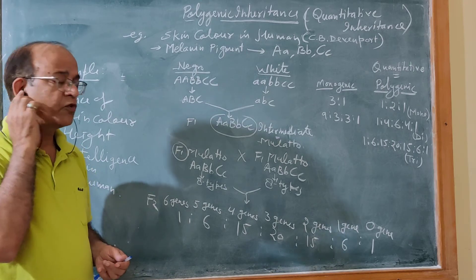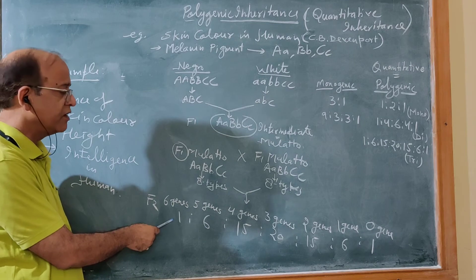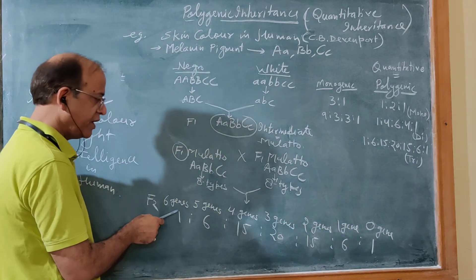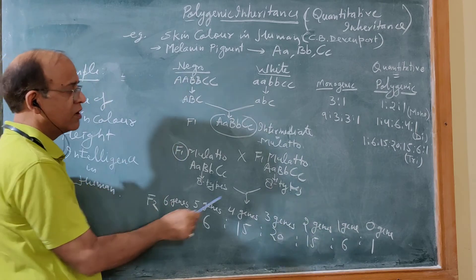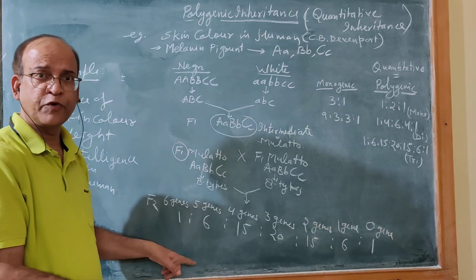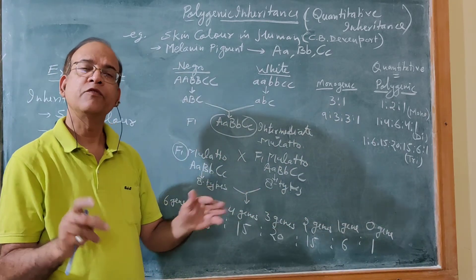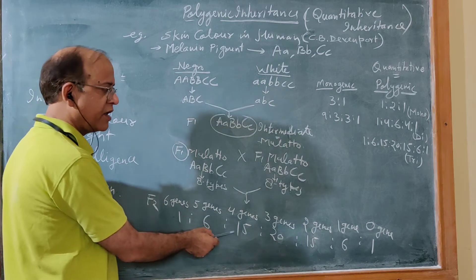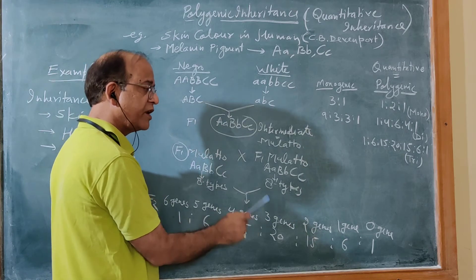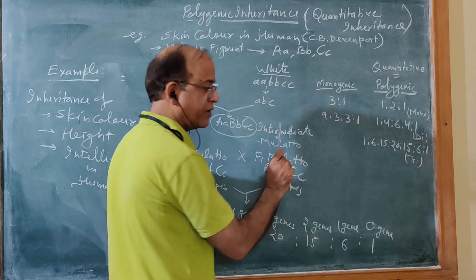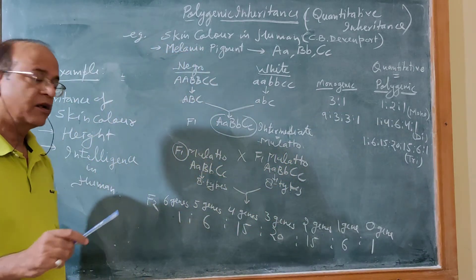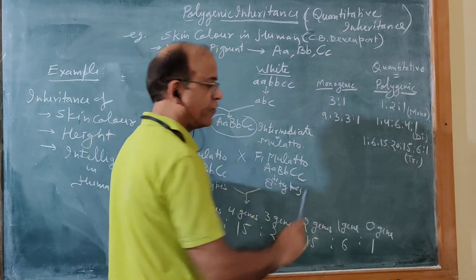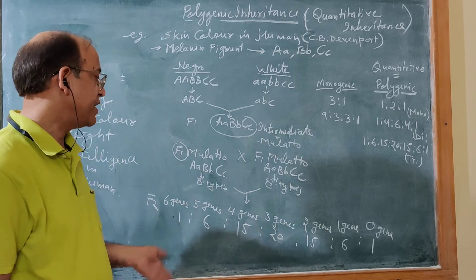When calculated, out of those 64 combinations: one individual has six dominant genes (Negro), one has zero dominant genes (white), six have five dominant genes, fifteen have four dominant genes, twenty have three dominant genes, fifteen have two dominant genes, and six have one dominant gene. The ratio in F2 generation is 1:6:15:20:15:6:1. Only two individuals match the parental types and the remaining 62 are intermediates.